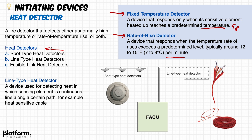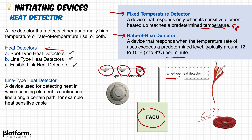Heat detectors are available in a spot type, a linear or line type heat detector, or a fusible link heat detector. Whenever you have a fire alarm control panel, spot types cover most areas as standard devices, and in some applications you can also connect line type heat detectors to the same panel using certain settings. The line type heat detector is a device used for detecting heat in which the sensing element is a continuous line along a certain path — for example, a heat-sensitive cable.